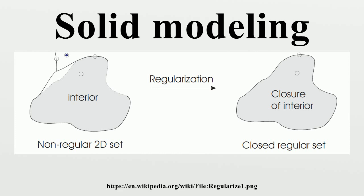CSG representations are particularly useful for capturing design intent in the form of features corresponding to material addition or removal. The attractive properties of CSG include conciseness, guaranteed validity of solids, computationally convenient Boolean algebraic properties, and natural control of a solid shape in terms of high-level parameters defining the solid's primitives and their positions and orientations. The relatively simple data structure and elegant recursive algorithms have further contributed to the popularity of CSG.